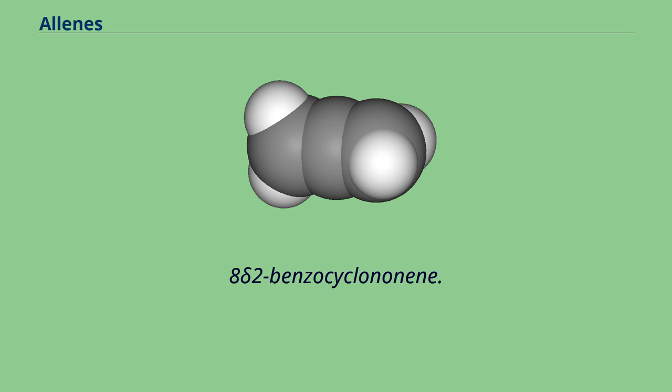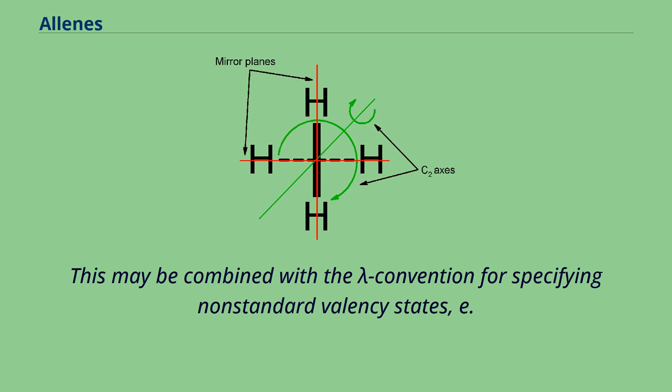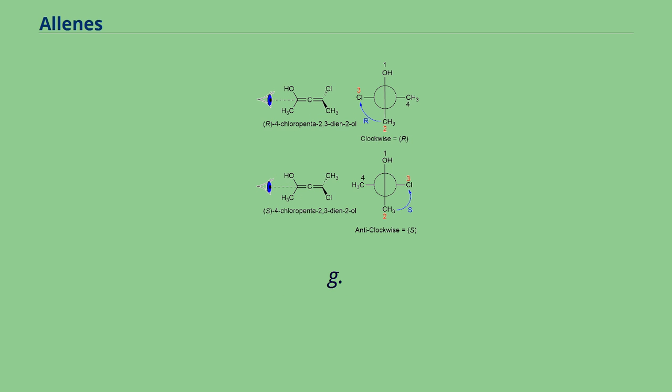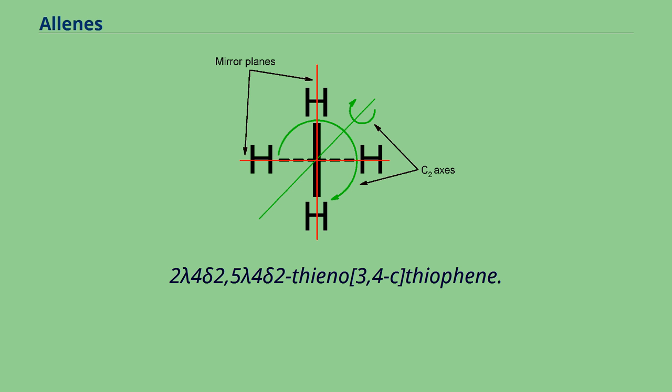This may be combined with the lambda convention for specifying non-standard valency states, e.g., 2-λ4-δ2,5-λ4-δ2-thieno[3,4-c]thiophene. This article incorporates text by Oleksandra Zuykovska available under the CC BY 2.5 license.